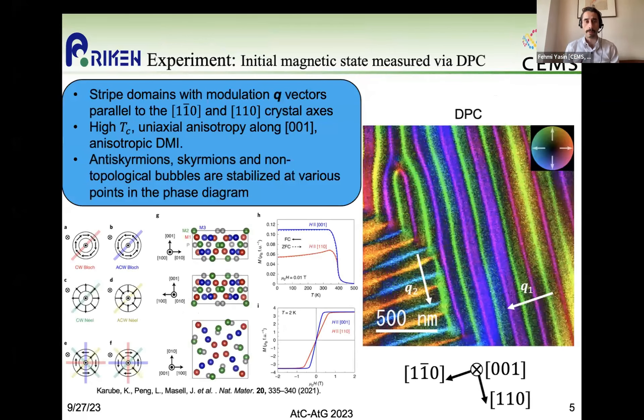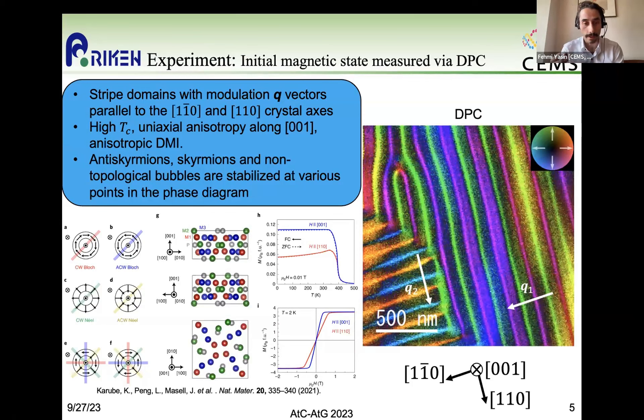So the material that we studied here was actually a crystal with a ferromagnet with uniaxial anisotropy and it has S4 crystal symmetry. So it has an anisotropic DMI interaction, which means that it can stabilize antiskyrmions. The initial magnetic state of this system is shown on the right-hand side here using DPC real space imaging. You can see that it is a helical magnetic domain with modulation Q vectors pinned to the 110 and minus 110 crystal axes.